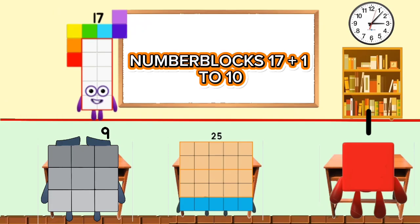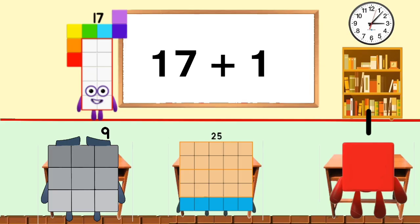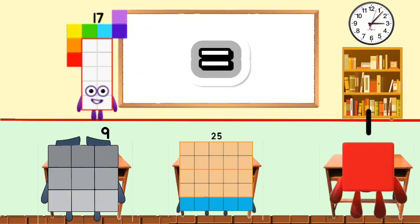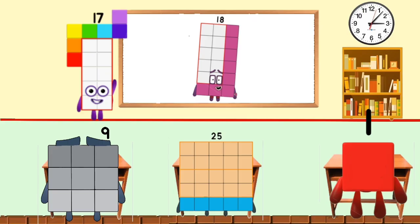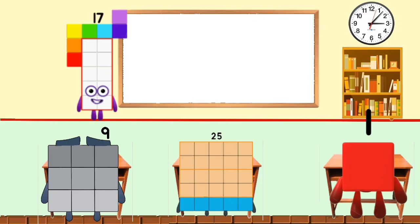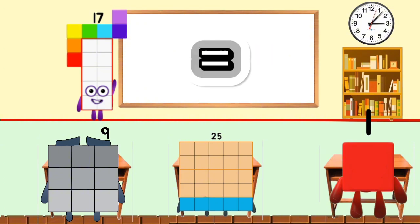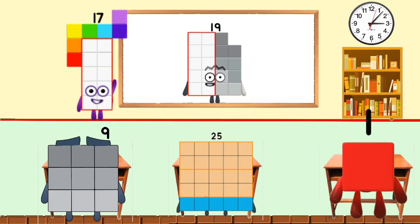Number Blocks: 17 plus 1 to 10. 17 plus 1 equals 18. 17 plus 2 equals 19.